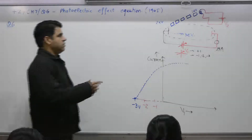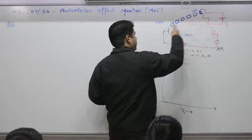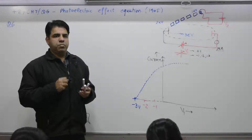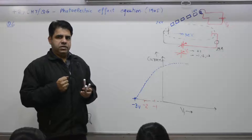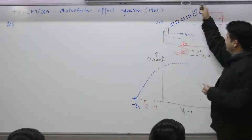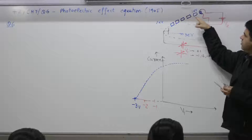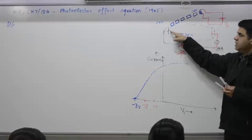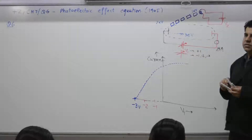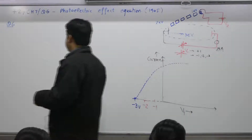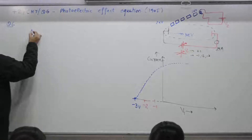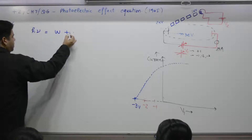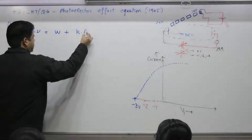One-to-one means one photon interacts with one electron. Light is emitted in the form of bundles — packets of energy. One packet interacts with one electron. So when one packet has energy, the total energy of one packet is h times frequency: h·ν = work function + maximum kinetic energy.